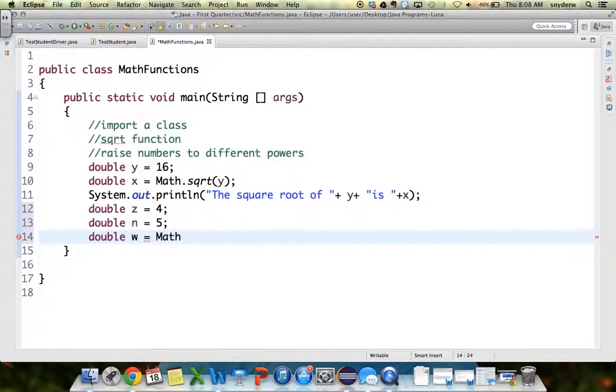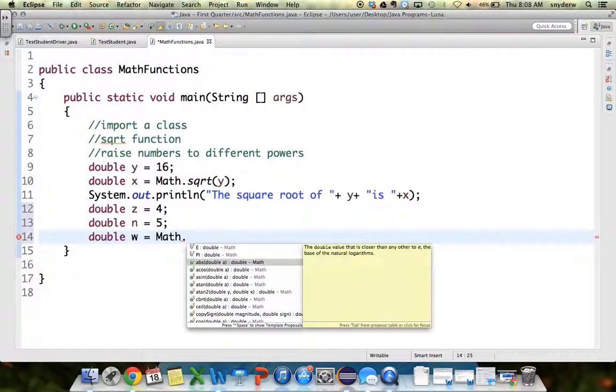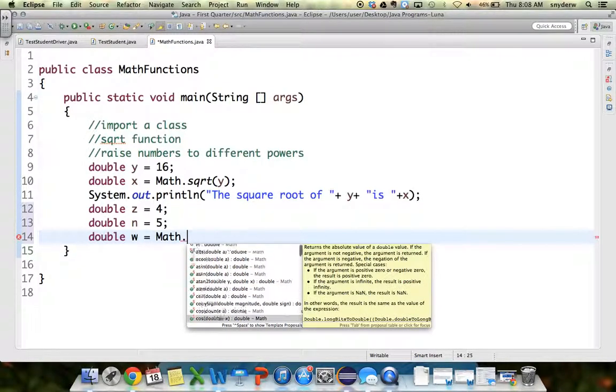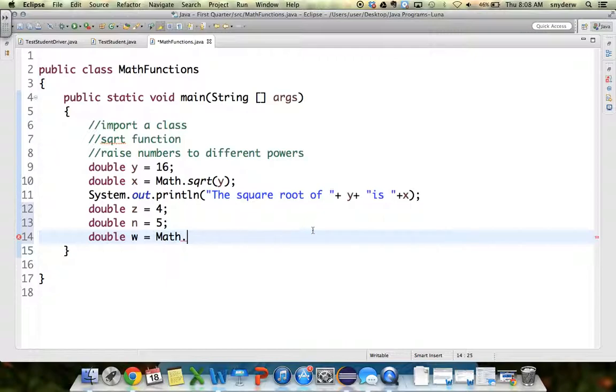Java made this whole class called Math, and it has a whole bunch of options. And you could scroll through them here and see what they are. The one we're going to use right now is called pow, p-o-w, and that stands for power. z to the n power. So that finds 4 to the 5th power.